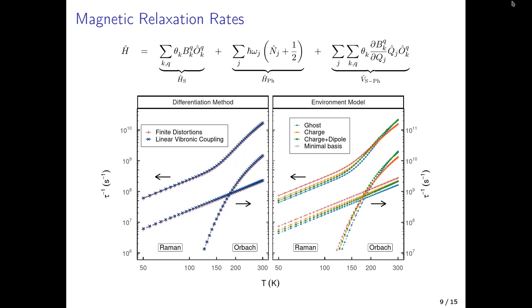Looking first at the differentiation method: using the point charge model of the environment, we see no large differences between the LVC and numerical differentiation approaches. This is one of the most important results of the study — the LVC approach comes with valid approximations that are well-applicable to these molecules. When comparing different environment models, we do see some differences, and surprisingly the simple charge model gives rates closer to the reference than the charge-plus-dipole model.